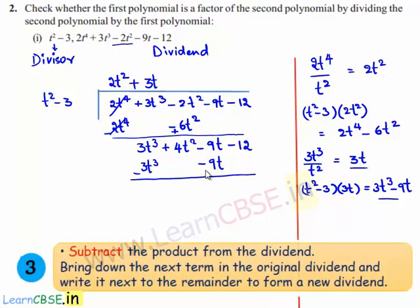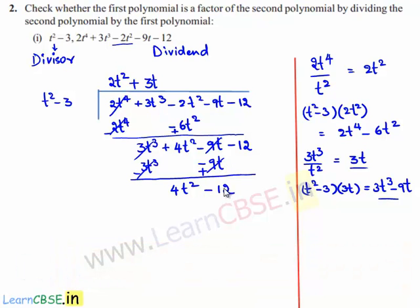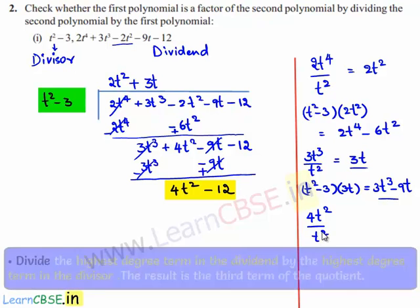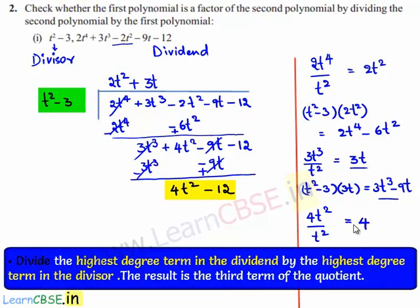On subtracting, 3t³ and minus 3t³ cancel. We get 4t² minus 9t plus 9t, which cancel, leaving minus 12. The new dividend is 4t² minus 12, with highest degree term 4t². Dividing by t² gives 4, so 4 can be written at the place of the quotient.